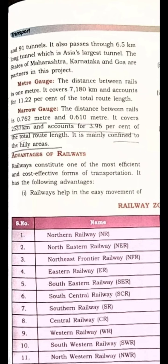Even lesser than the meter gauge is the narrow gauge, which is 0.762 meters, and in many cases 0.610 meters. It accounts for 3.96% of the total route length and is confined to hilly regions. You will find the narrow gauge in mountainous regions and hill stations like Darjeeling, Shimla, and Siliguri. You must have seen the toy train if you visited Darjeeling — that is running on the narrow gauge.